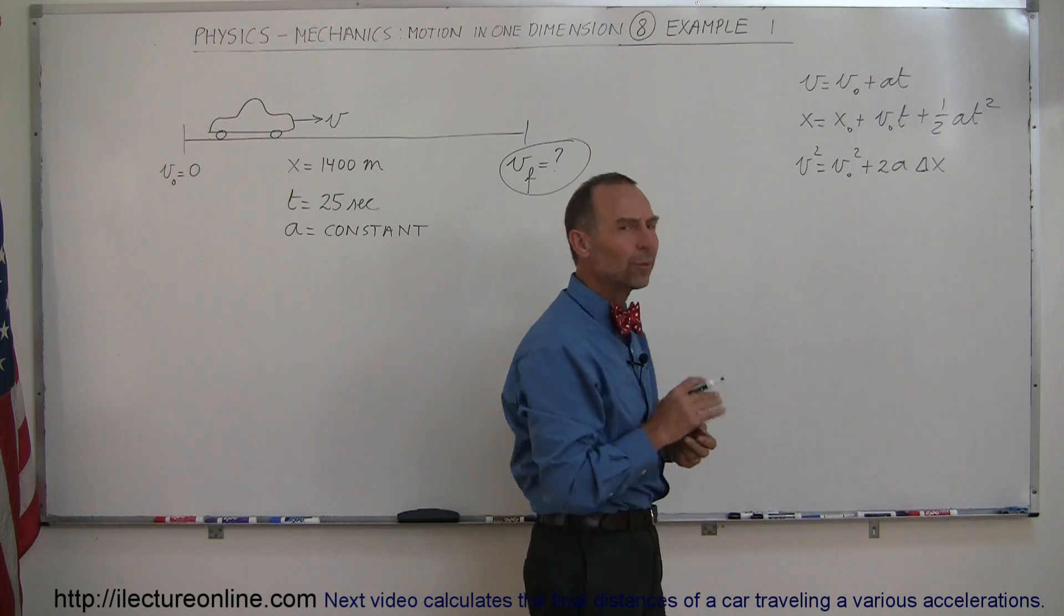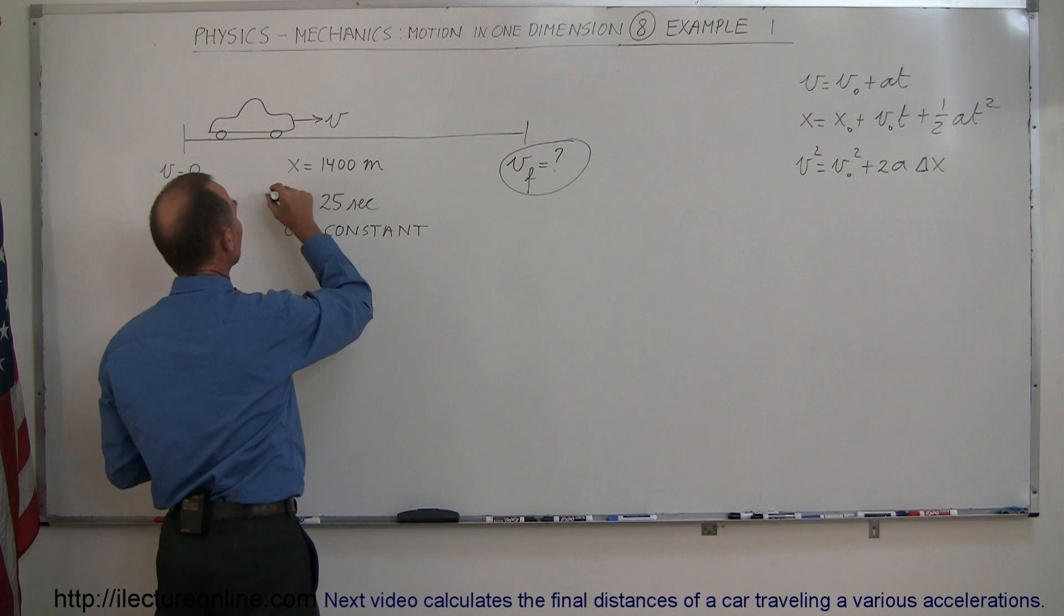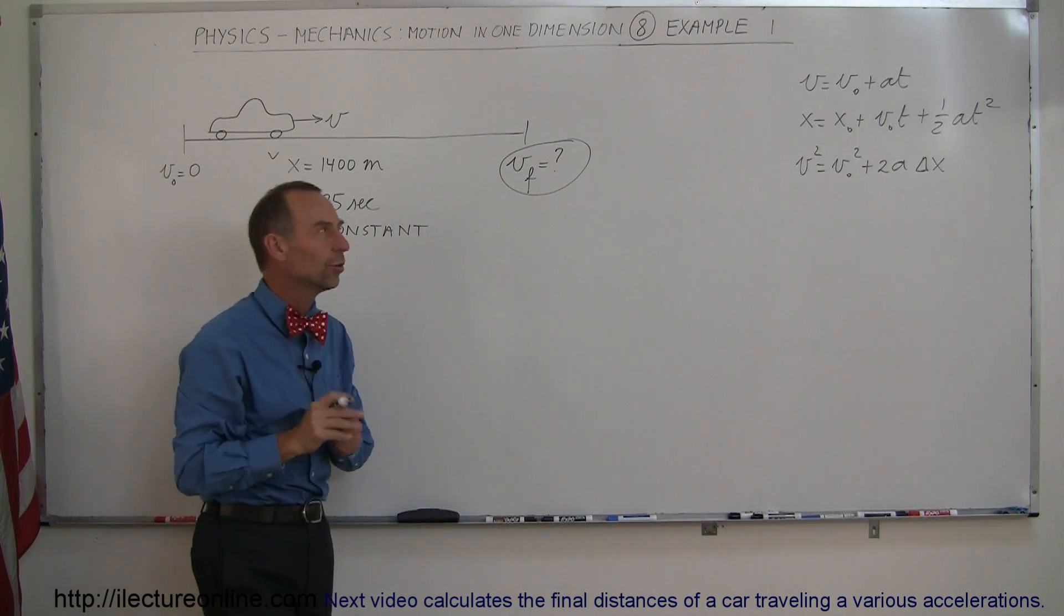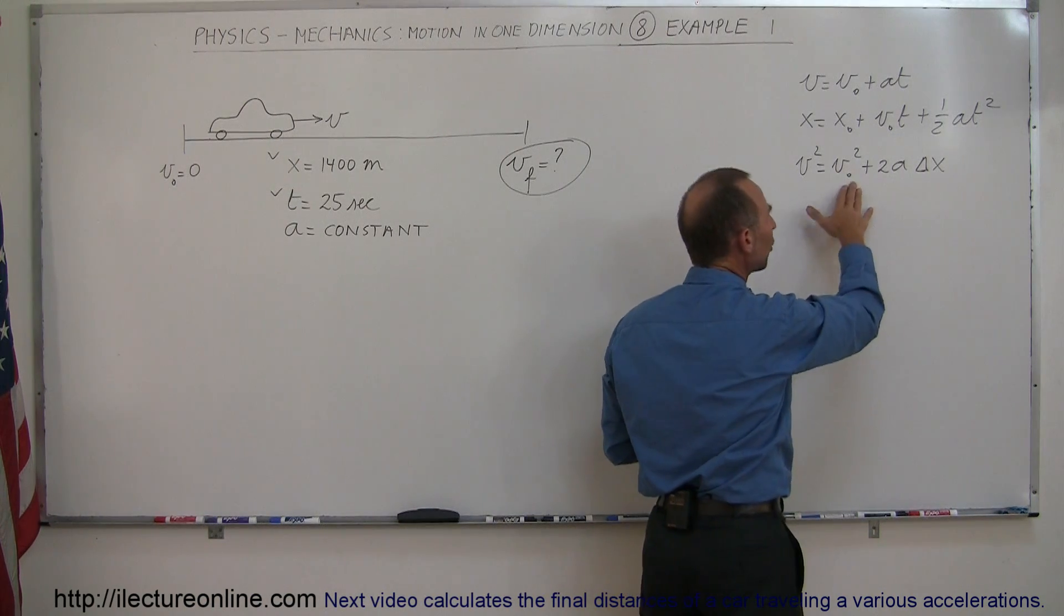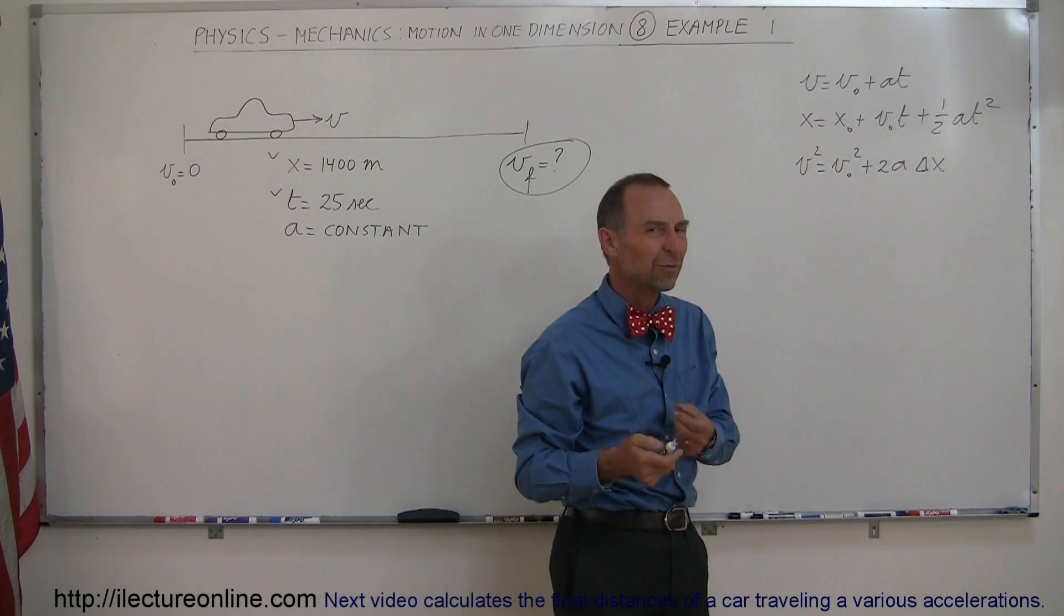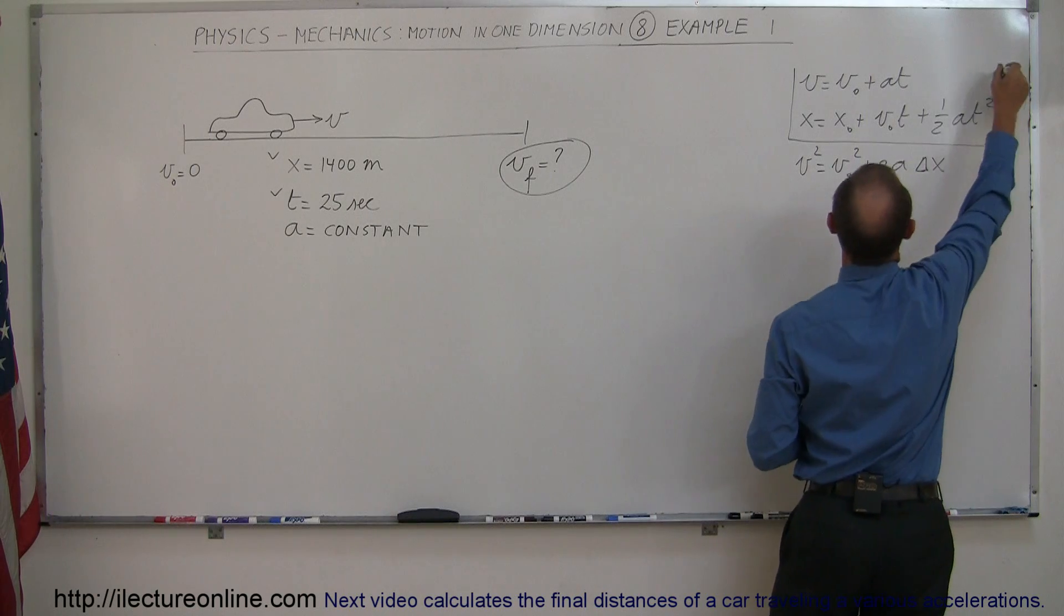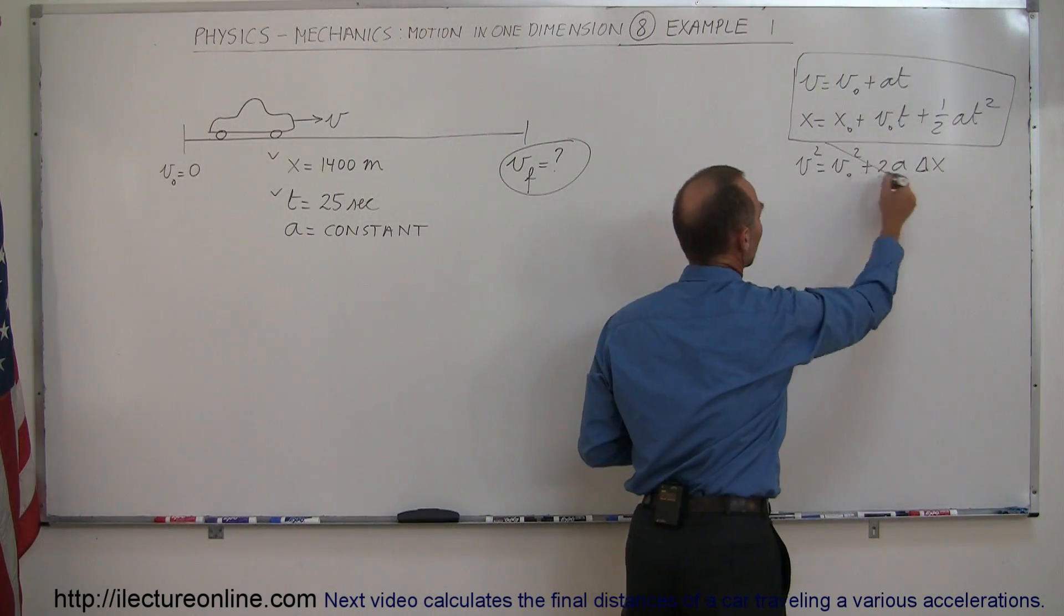Now which of those three equations do you need? Let's see what we've given. We're given that the time is 25 seconds. We're given the total distance, so time and distance are known, which means I probably don't want to use the third equation because we don't use time there, and since time is given, we probably want to use it. So we probably want to use one of these two equations, maybe even both. So we're not going to use the third equation.